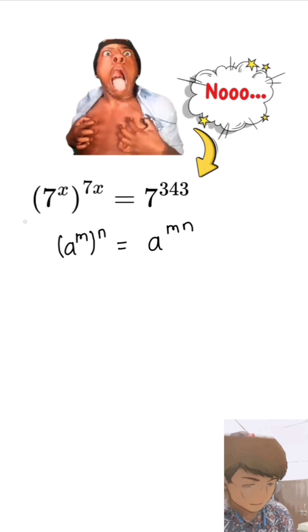So I can write this expression into 7 to the power x multiply 7x equal to 7 to the power 343. Now we know that 343 is a cube of 7.